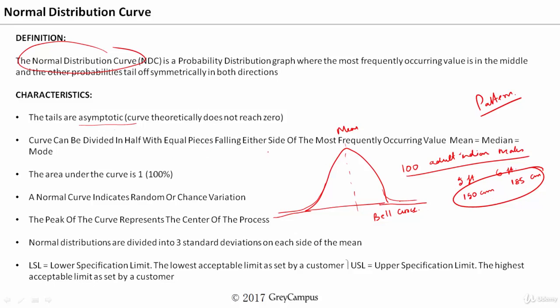The curve can be divided into equal halves, with data falling either side — it is equally distributed on the left and right. The most frequently occurring value, that is the mean, is at the center. The total area under the curve is 1. A normal curve indicates a random or chance variation, meaning the process is running only because of common cause variations, with no special cause variations.